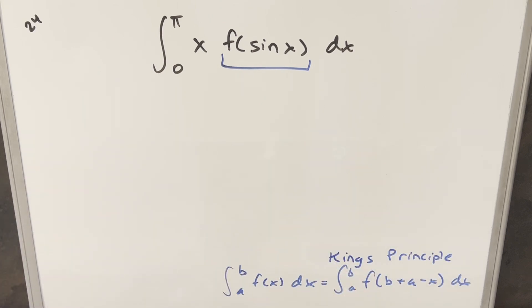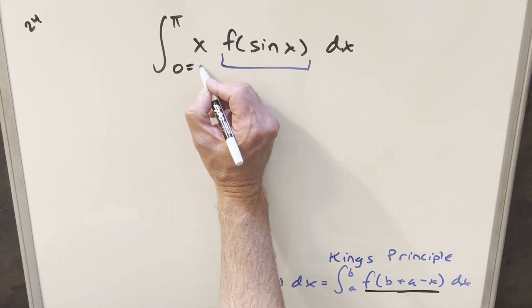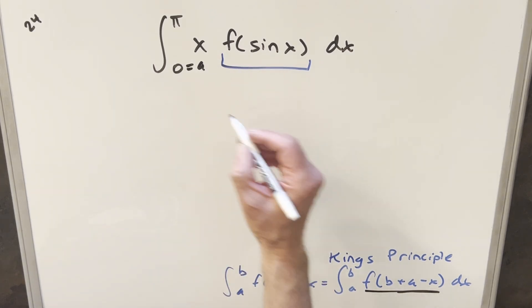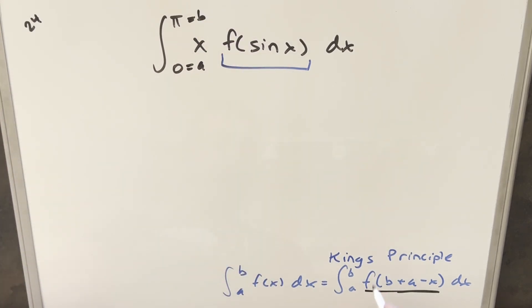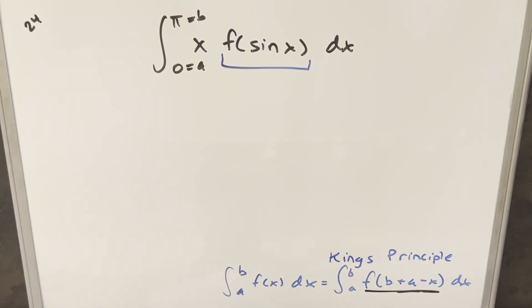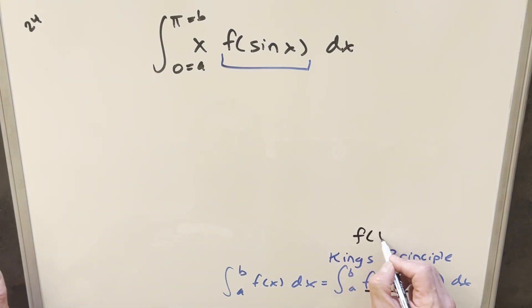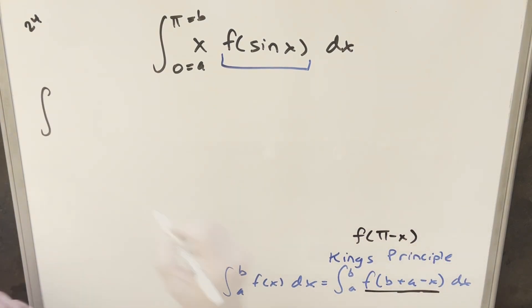For King's Principle, we'll use what we have down here. The key thing is figuring out what f of b plus a minus x is going to be. Our lower bound is a, our upper bound is b, so we add them together and we just get pi. So for this value, putting it together, this is just going to be f of pi minus x.